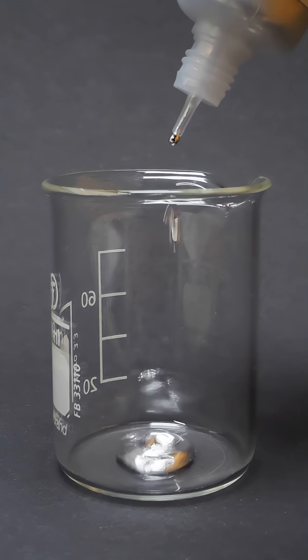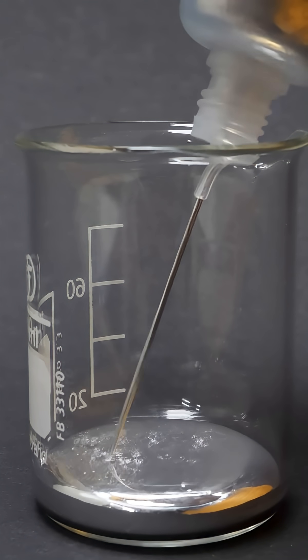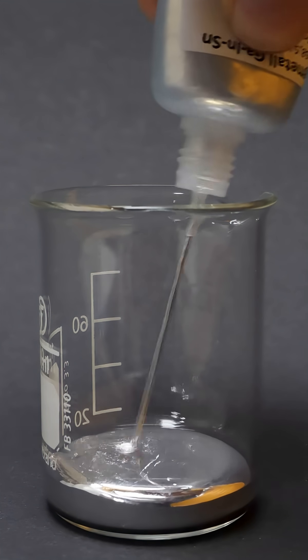This shiny liquid is made of metal, but it's not pure silver in its natural form. It's essentially a non-toxic little brother called Galinstan.